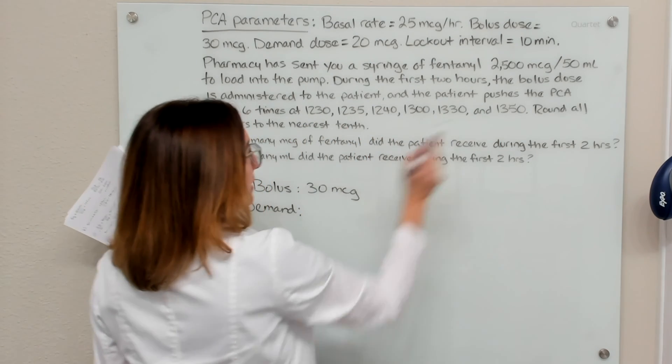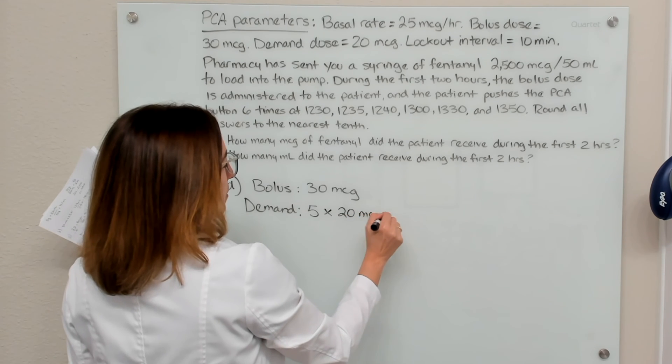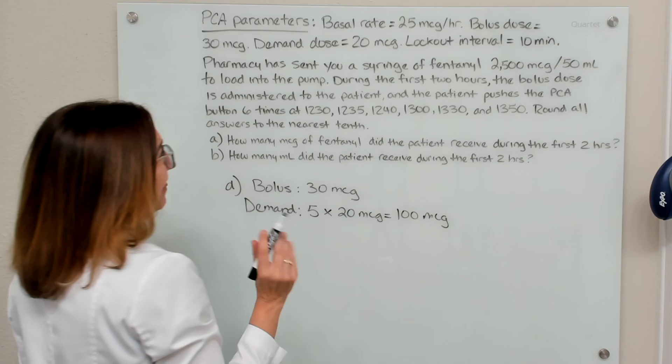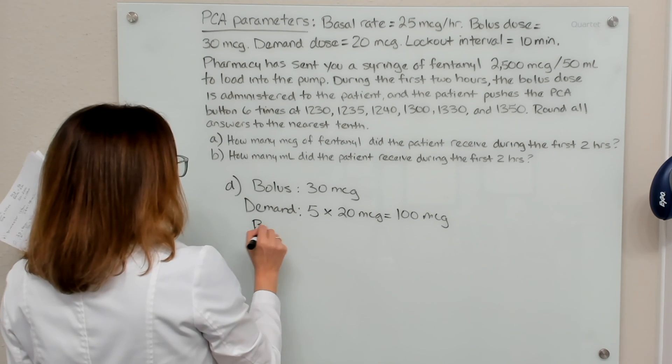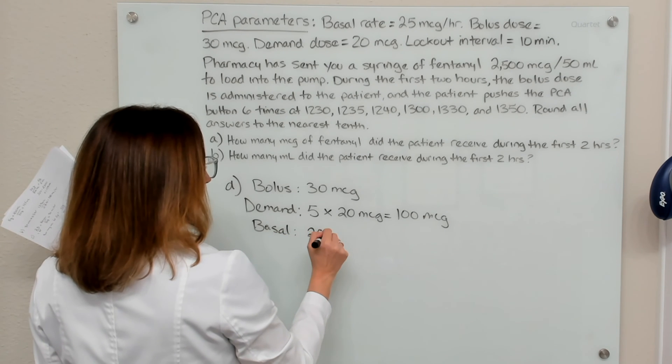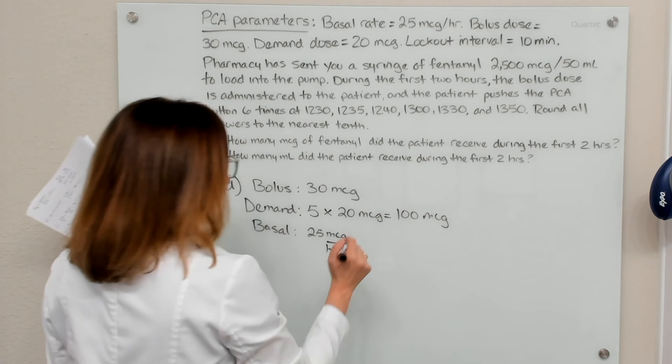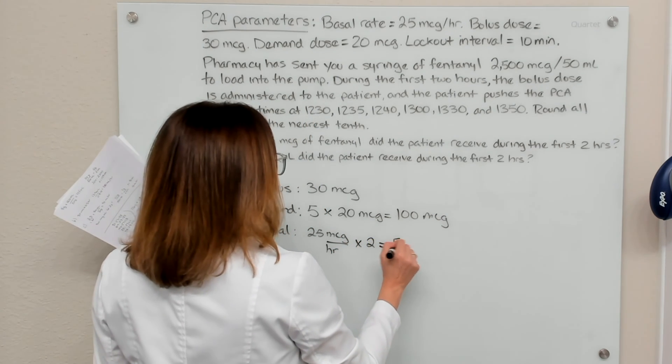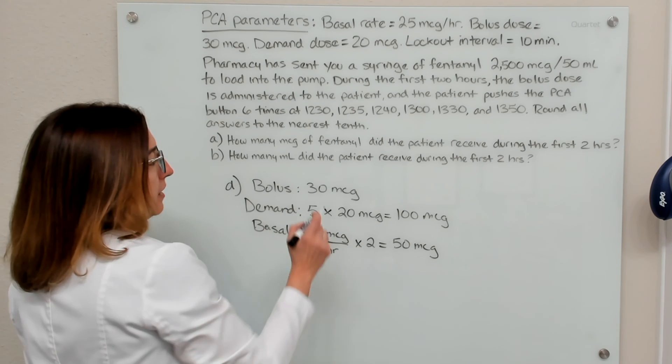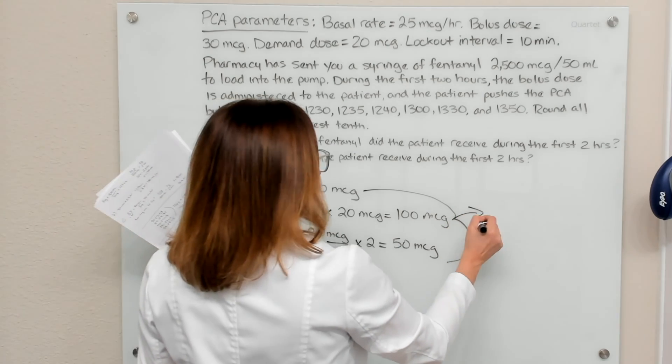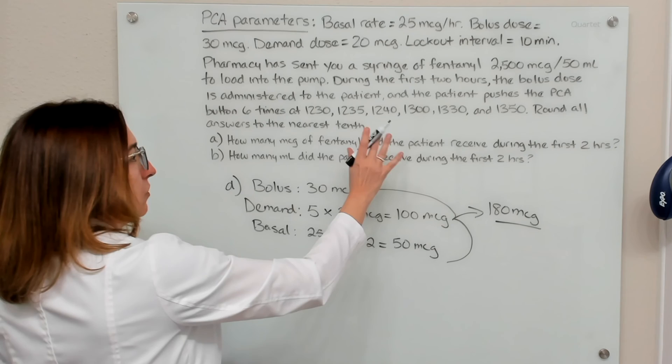So they got five of the six demand doses. They got five doses, and for each demand dose, they got 20 micrograms. So that equals 100 micrograms. And then they are also getting a basal rate infusion of 25 micrograms per hour. The question is asking us how much did they receive during the first two hours? So if we multiply this times two, that equals 50 micrograms. So if we add up these three amounts, we end up with 180 micrograms. That is the amount of fentanyl that the patient got during those first two hours.